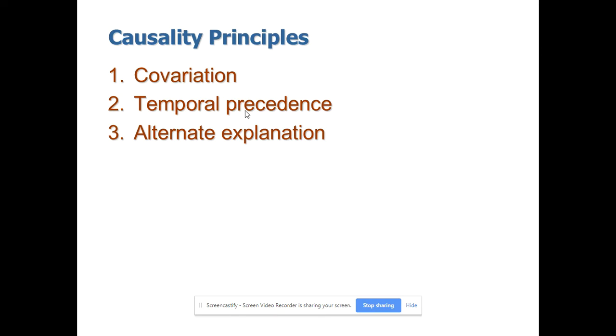Because temporal precedence says that, assumption says that, x should happen first before your y. Which means your x variable should happen first and then only your y can happen or some changes can be observed in your y.